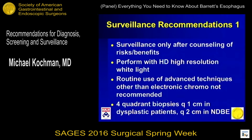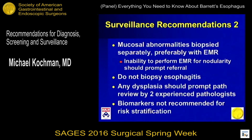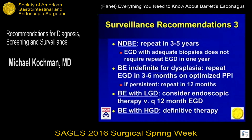For surveillance recommendations: surveillance only after counseling of risks and benefits; high-resolution white light; four-quadrant biopsies every centimeter in dysplastic patients, every two centimeters in non-dysplastic patients. Do not biopsy inflamed esophagus, and biomarkers are not recommended. Take-home points: non-dysplastic Barrett's epithelium — repeat in three to five years; no need to repeat if initial endoscopy shows no dysplasia. Barrett's indefinite — repeat in three to six months on a PPI; if persistent, repeat in 12 months. Both low-grade and high-grade Barrett's are viable candidates for ablation. Consider endoscopic ablation or every 12-month EGD in low-grade, and in high-grade, go to definitive therapy. Thank you.